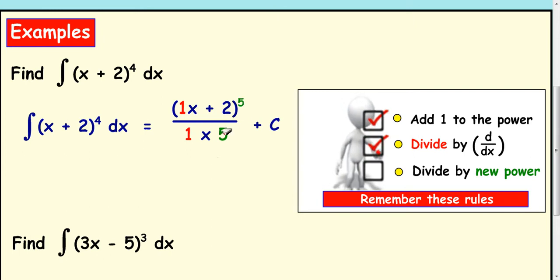So your new power has been put to the bottom, and your derivative of the bracket has been put to the bottom. Simplify that by multiplying 1 by 5.